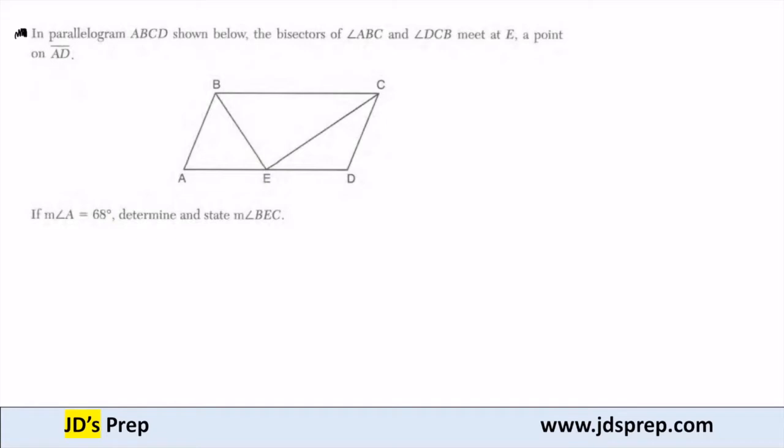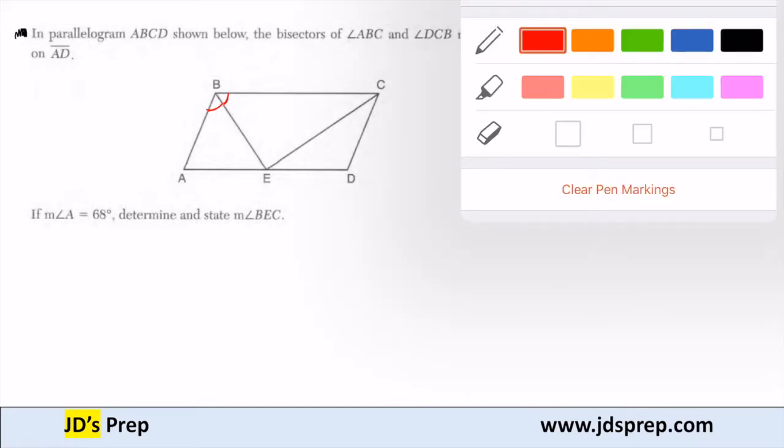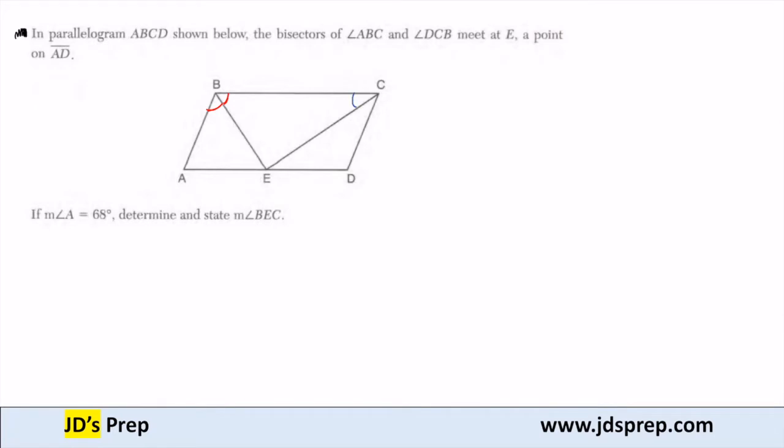Because it's a bisector, I know that this angle here, ABE, is congruent to this angle here, CBE. I also know that because CE is a bisector, this angle is congruent to that angle there.